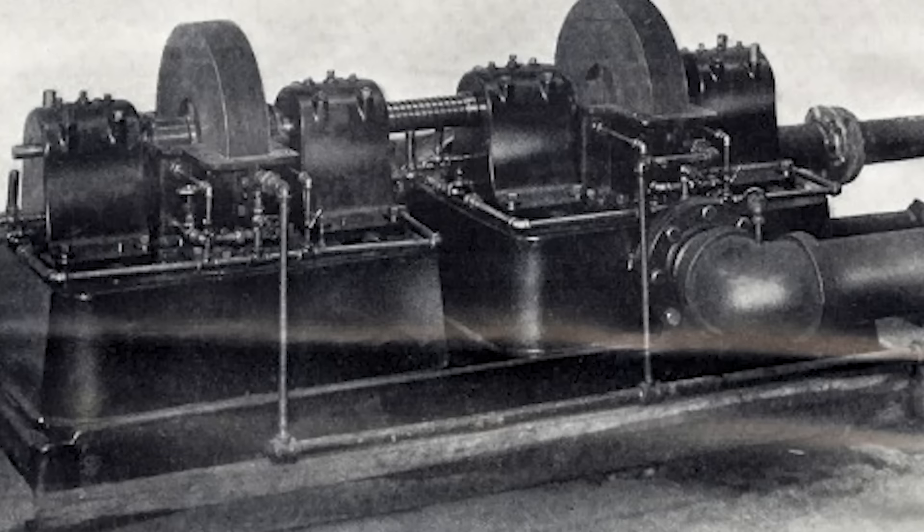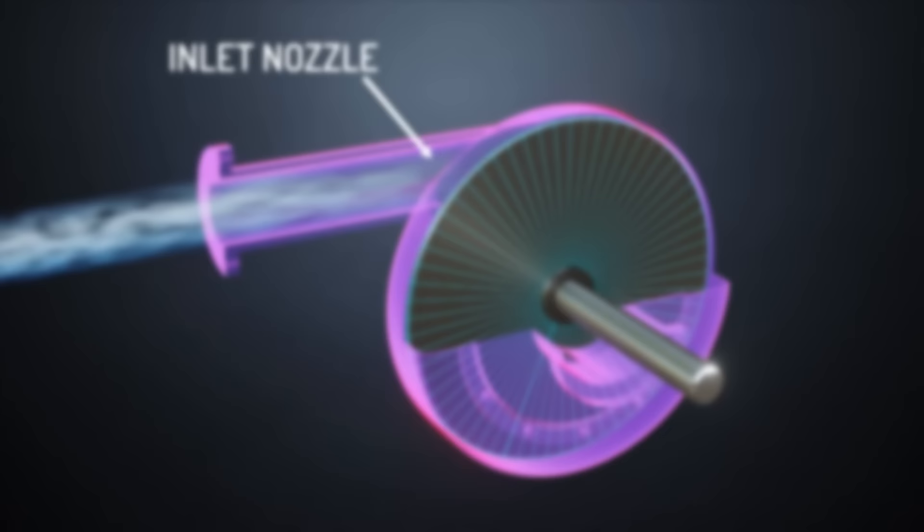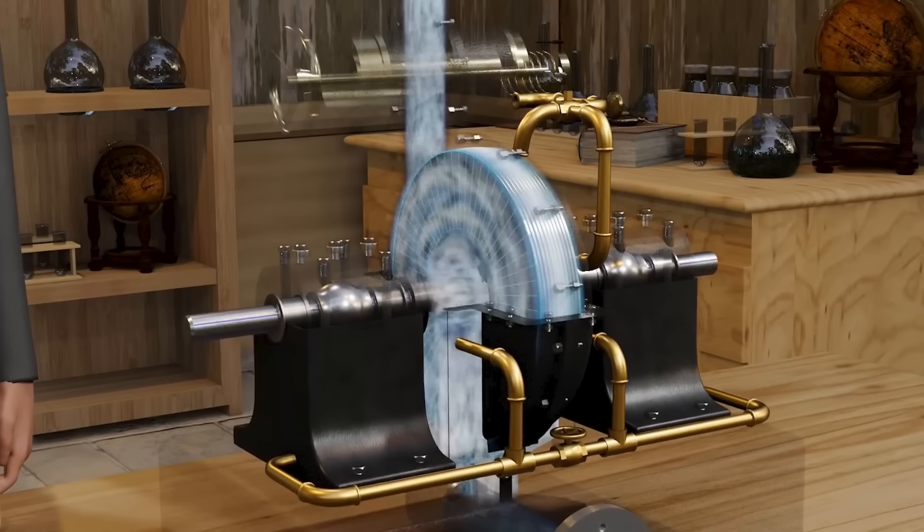The Tesla turbine, invented by Nikola Tesla in 1913, works without edges. It uses a cohesive stream. The fluid is coordinated into smooth circles, creating rotational movement through energy transfer. The plates are stacked in basically the same manner as CDs on a post. Not at all like customary turbines which use cutting edges, the Tesla turbine takes advantage of the boundary layer effect. It's known by different names, including bladeless turbine and Prandtl layer turbine.